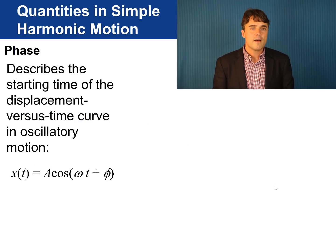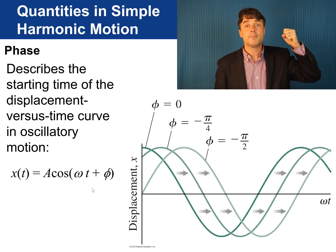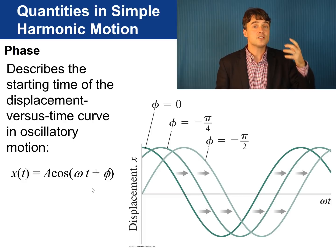So, what about this phi in this equation? So far, we've been drawing the graphs so that phi equals zero, which means the mass was released from rest at position x equals A at time t equals zero.